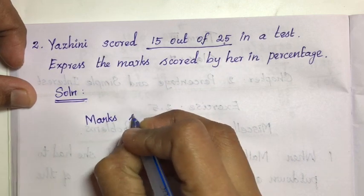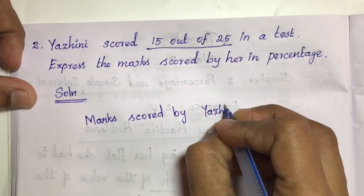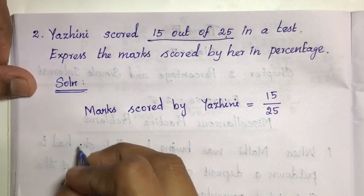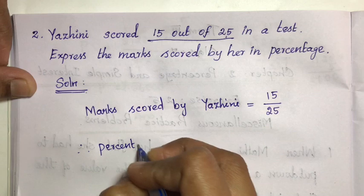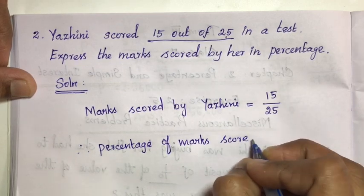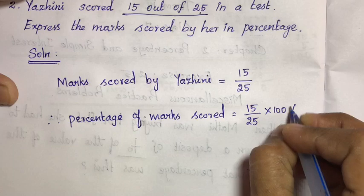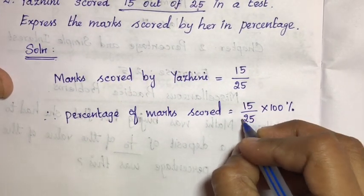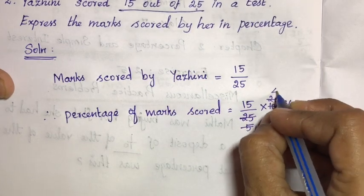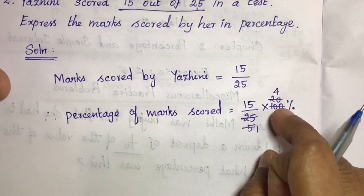Marks scored by Yalini is equal to 15 out of 25. Therefore, percentage of marks scored is equal to the fraction 15/25 multiplied by 100. Cancel here: 5 into 25 is 25, and 5 into 5 is... 4 times 25 is 100.